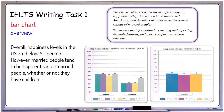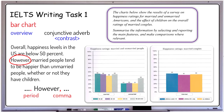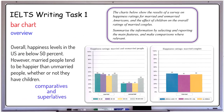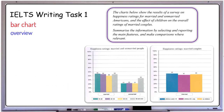Now let's see how we can put our key points into an overview. 'Overall, happiness levels in the US are below 50%. However, married people tend to be happier than unmarried people, whether or not they have children.' Please pay attention to the way I use the conjunctive adverb 'however' to draw a contrast between the two clauses. It's worth bearing in mind that almost all conjunctive adverbs are usually preceded and followed by punctuation marks. In addition, we can use comparatives and superlatives to incorporate comparisons into our summary. In this case, using the comparative adjective 'happier than,' I drew such a comparison. That's all about our overview — now let's move on to our body paragraphs.